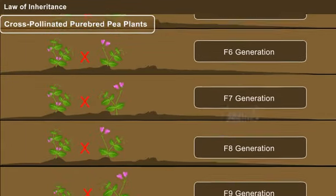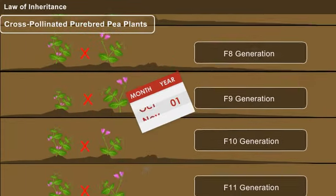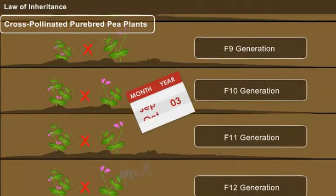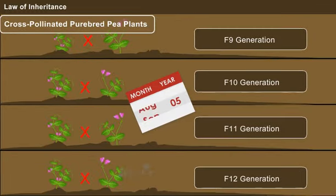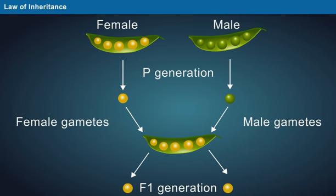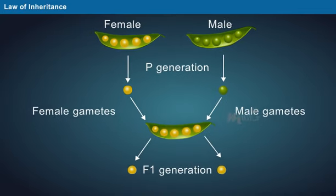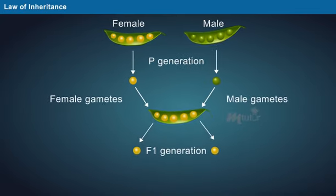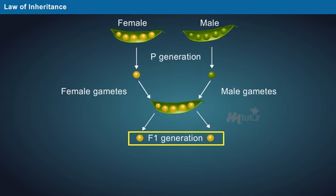Mendel selectively cross-pollinated purebred pea plants and observed the outcomes over generations. When pea plants with green or yellow seeds were cross-pollinated, the F1 generation produced only yellow seeds.